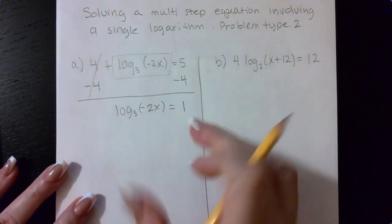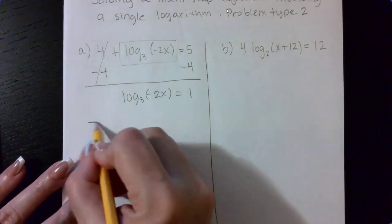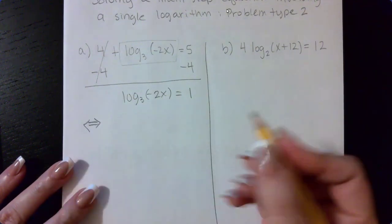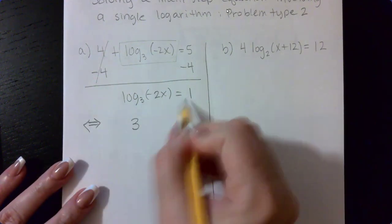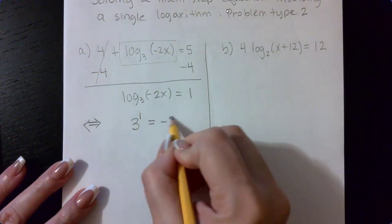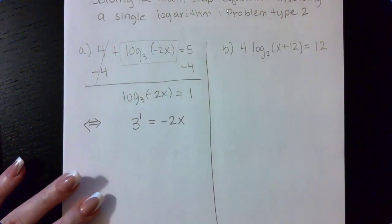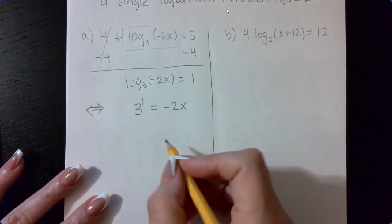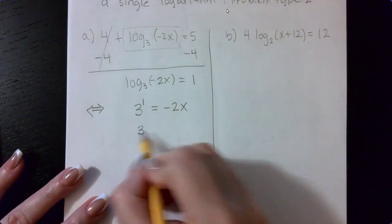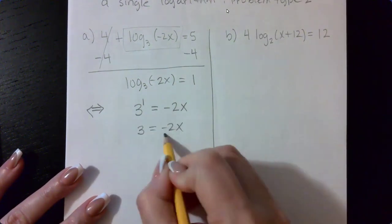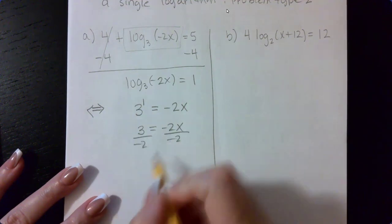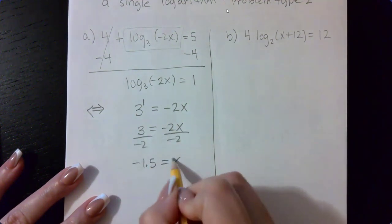Now that I have my log expression isolated, now I can go ahead and apply the definition of log. So I'm going to have this base with this exponent equal to the argument. And then I can solve that resulting equation. 3 to the power 1 is just 3. If I divide both sides by negative 2, I get negative 1.5 equals x.